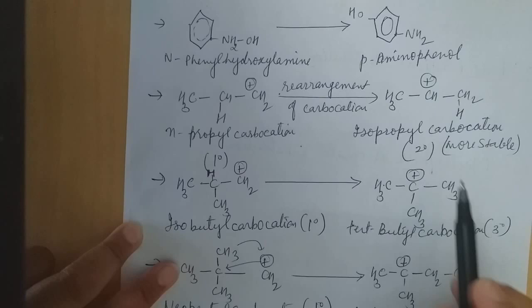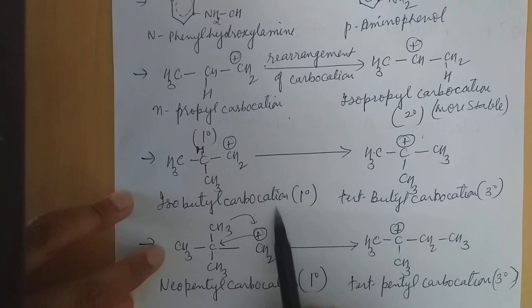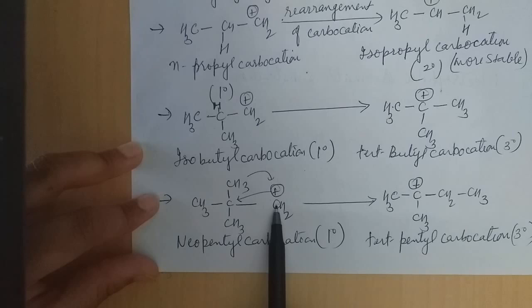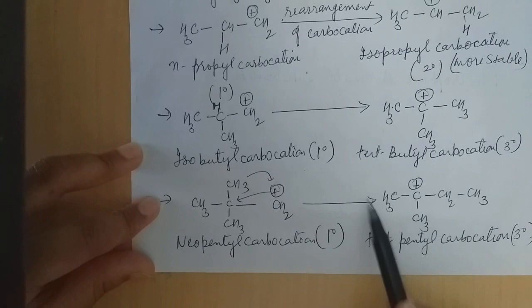In another example — isobutyl carbocation — this primary carbocation is converted into tertiary carbocation, which is more stable. Neopentyl carbocation: the positive charge is present on that carbon atom, and after rearranging, the positive charge moves so that primary carbocation is converted into tertiary carbocation. This is all about the four types of reactions.